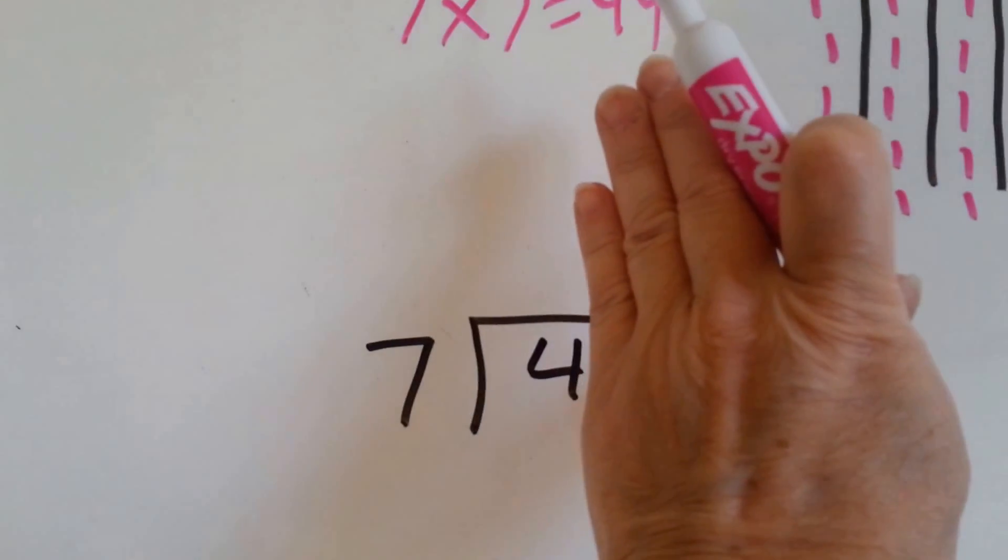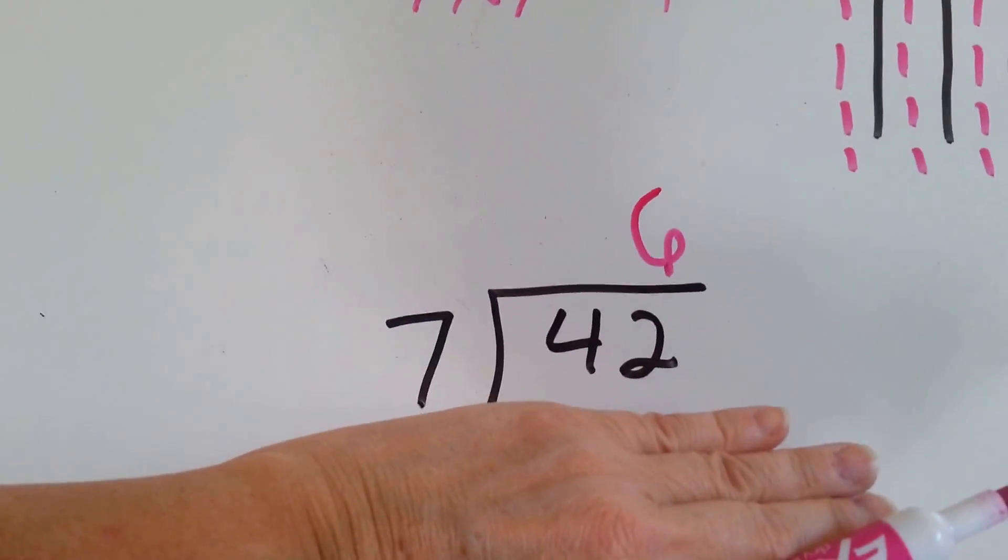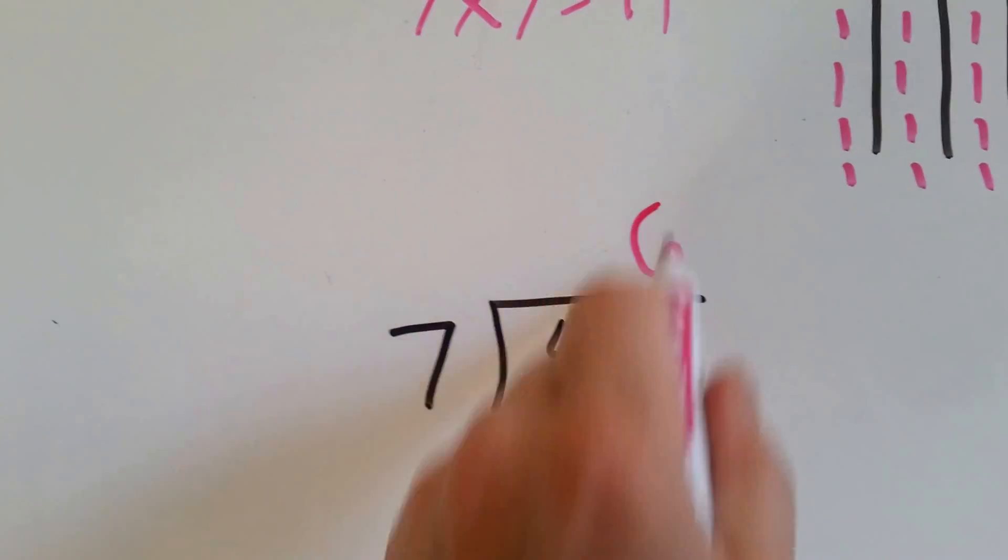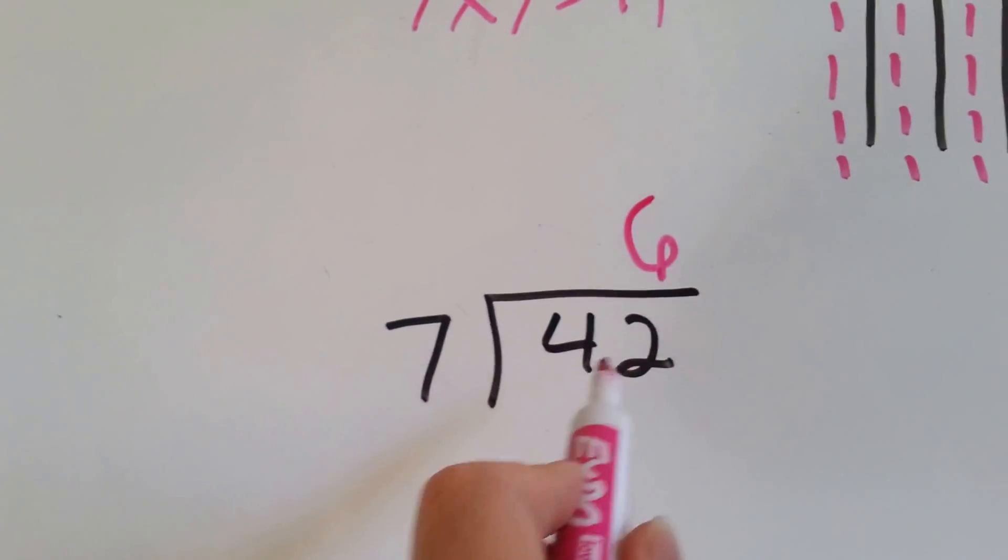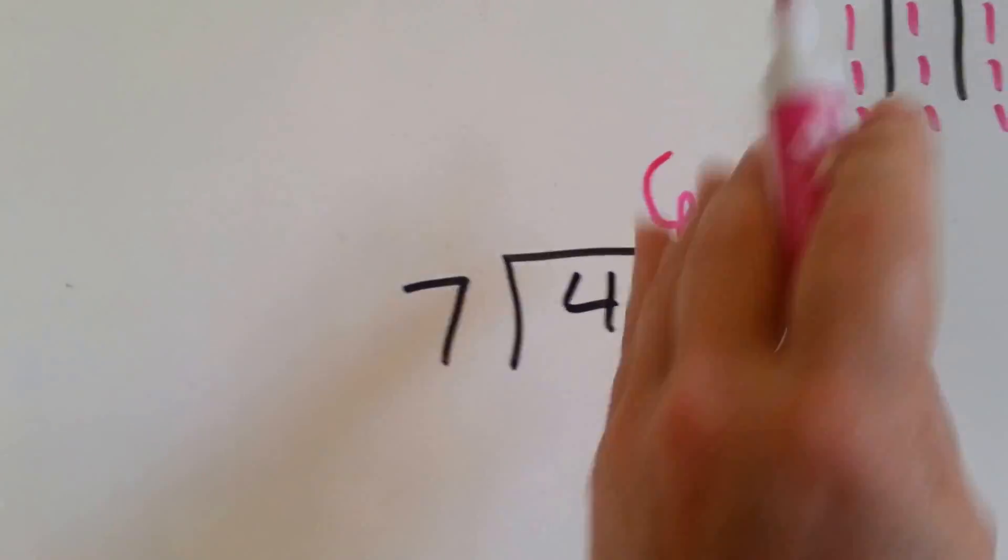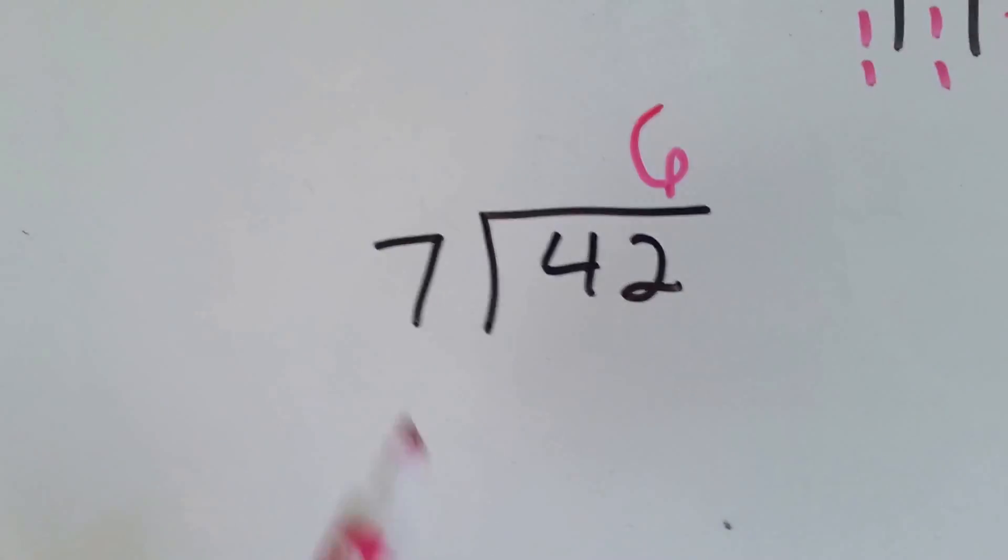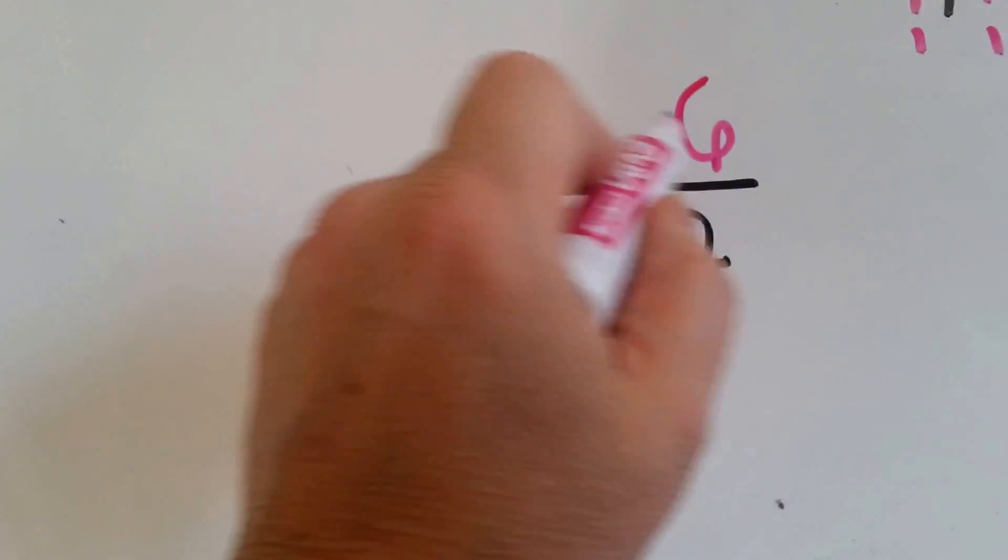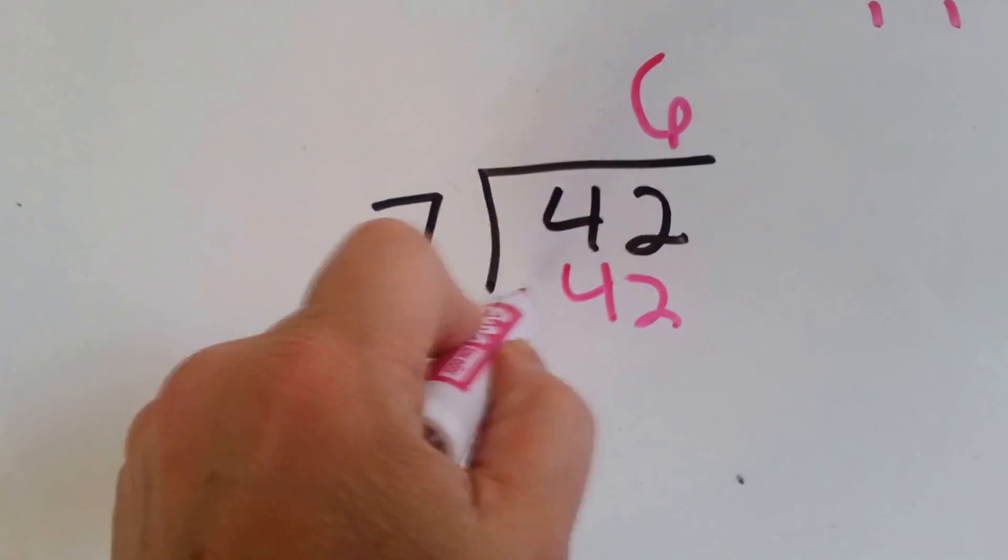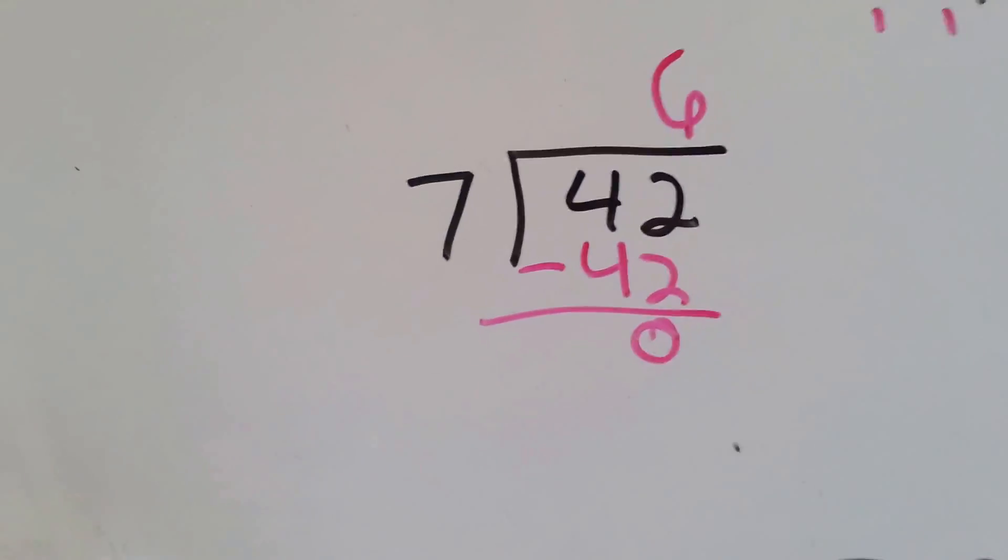Again, because we're not putting 7 into 4, we're putting it into the entire 42. And by putting the 6 above the 2, that lets everyone know that we used the whole 42 and not just a 4. Because 7 doesn't fit into 4, does it? So now we say 7 times 6 is 42. We do our subtraction and get 0. Okay?